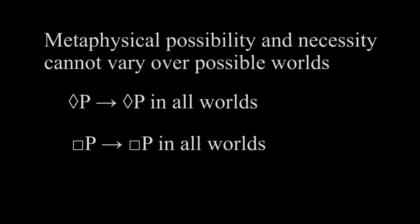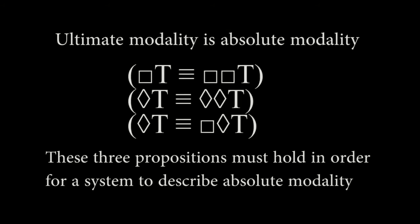This means that when we have to pick a system of modal logic, it must account for this — it must be able to derive this formula in order to accurately represent metaphysical possibility and necessity. When we are dealing with metaphysical possibility and necessity, we are dealing with ultimate possibility and necessity. By ultimate, I mean possibility and necessity that does not vary over different possible worlds. For there has to be at least one truth that holds for absolutely all possible worlds with no exceptions. And if it didn't, then the statement 'there is no truth that holds for all possible worlds' would itself hold for all possible worlds.